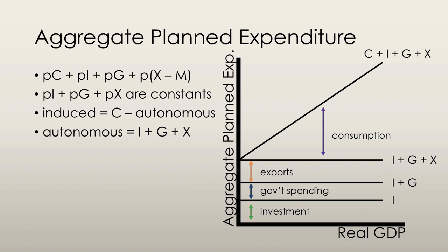That gives us C plus I plus G plus X. We also have imports whenever we're in an open market, so we're going to take away the import function. The import function is just like a consumption function — it's sloped upwards because as real GDP increases we tend to import more. You subtract every point of that import function from C plus I plus G plus X, and that in essence gives you the aggregate expenditure curve.